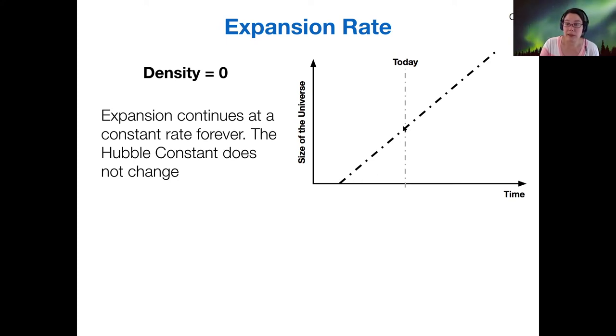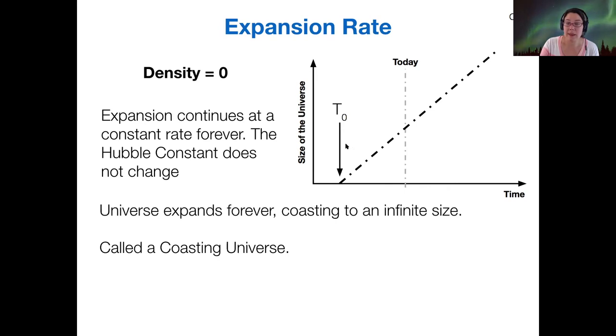And essentially following this dashed line back to this point where it intersects the time axis gives us the Hubble time T naught. So the idea here is that there's nothing in the universe to slow the expansion down and the universe just continues coasting to an infinite size.